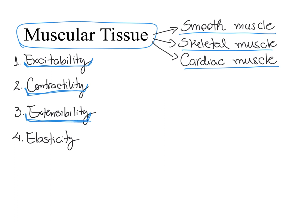Extensibility is the property that our muscle cells have that allows them to be extended, obviously within limits, and not get damaged. After a muscle cell is extended or contracted, we know this muscle cell is capable of going back to its original shape and length. This capability of going back to the original length and shape after it contracted or after it extended is what we call elasticity.